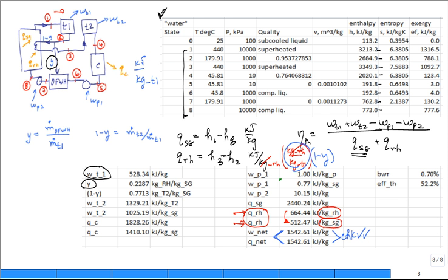So let me do this one right here. See this one? This is the work out of the second turbine stage per kilogram that goes through that second turbine stage. But if you want it per kilogram that goes through the first turbine stage, it's smaller. It's 1329.21 times one minus Y or 0.7713. So all of these terms here have the same units.